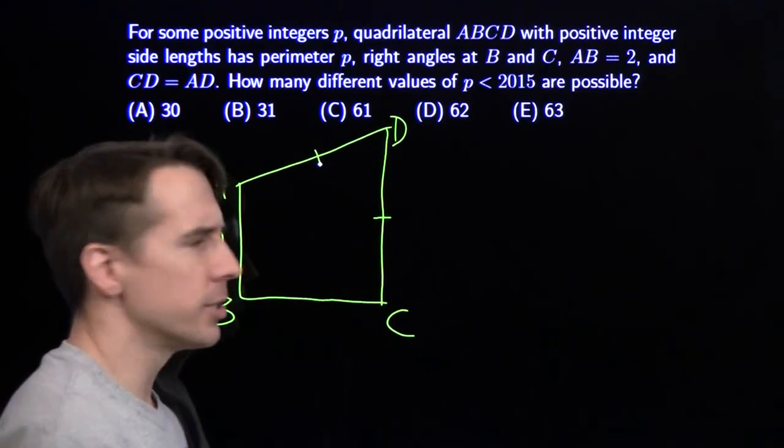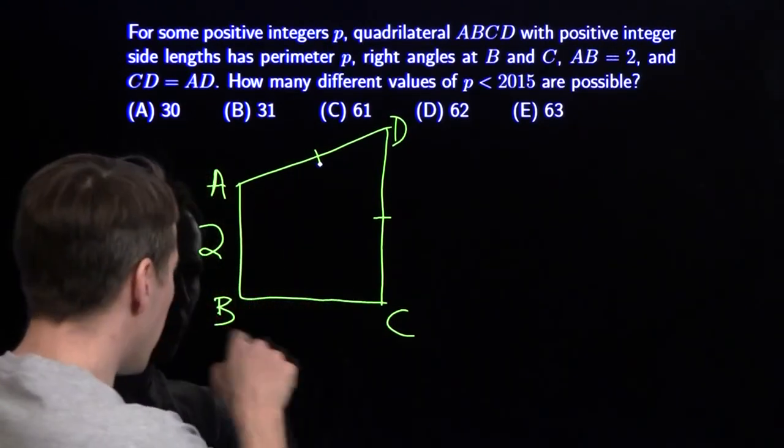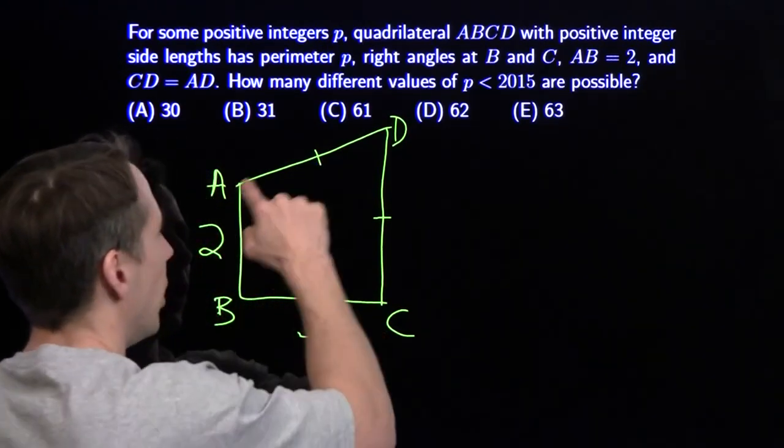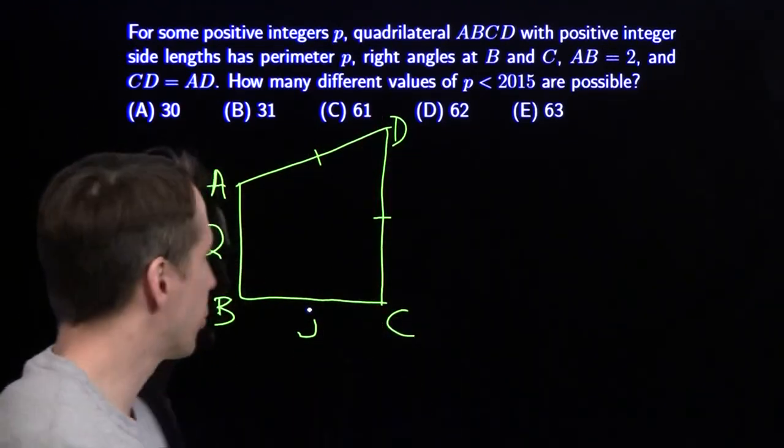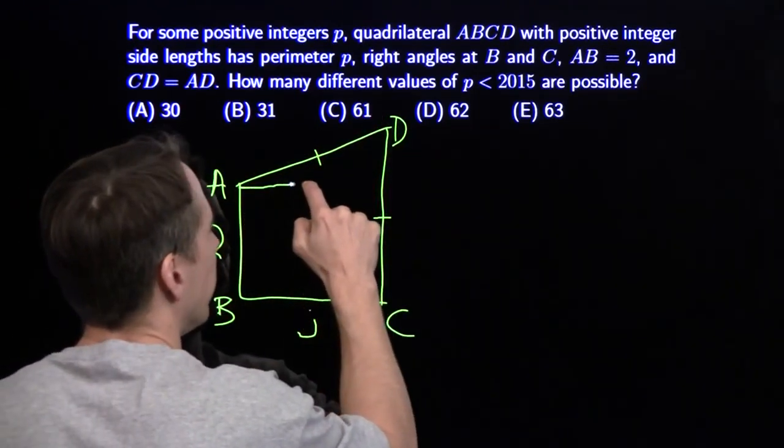We're going to need an equation somewhere. I'm going to throw some variables on this. I'm going to call BC, we're going to call that J. We're going to call AD and CD K. We need an equation. We're going to build a right triangle. So I'm going to go ahead and draw that right triangle in right now.